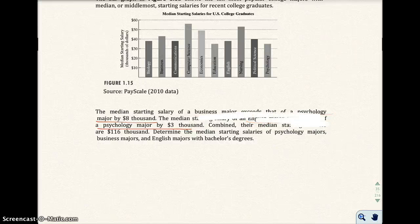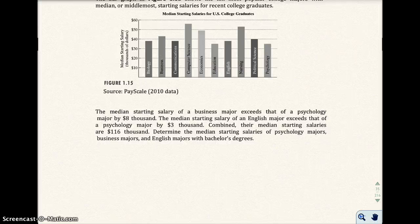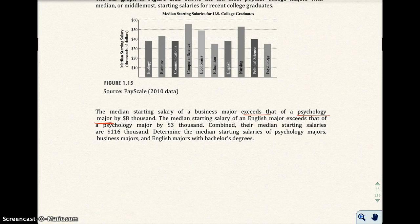There's a lot going on here, but I hope you realize that they're referring or basing everything off a psychology major. Business major exceeds the psychology major by $8,000. The English major exceeds the psychology major by $3,000. So everything is based on the psychology major.